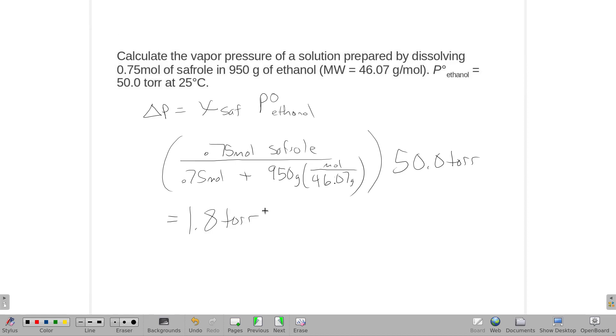Vapor pressure goes down. So our new vapor pressure is gonna be 48.2 torr. I get that by just taking 50 and minus 1.8.